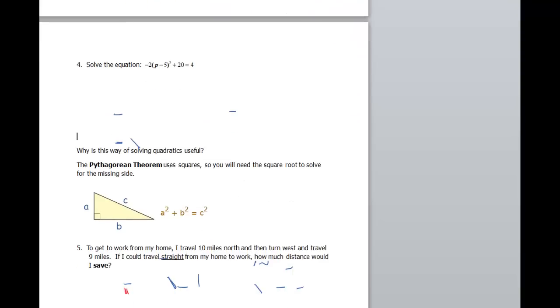Next problem, so this one has a little bit more going on. Negative 2 times the quantity (p - 5) squared plus 20 equals 4. Again, I'm gonna highlight this square right there. So we need to do some isolation.